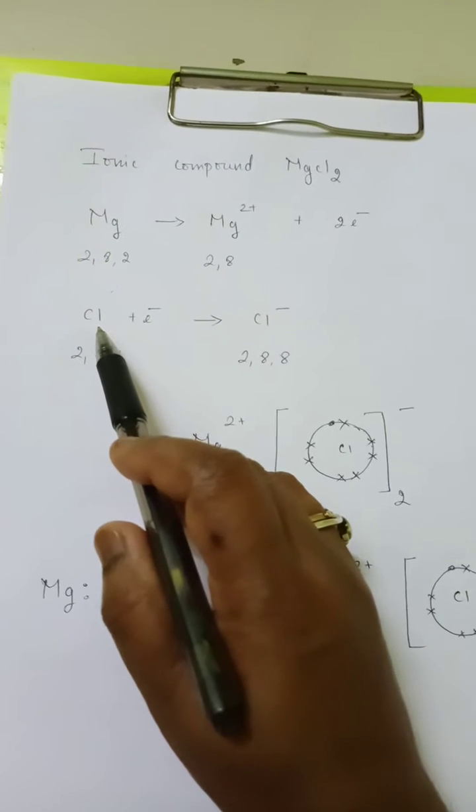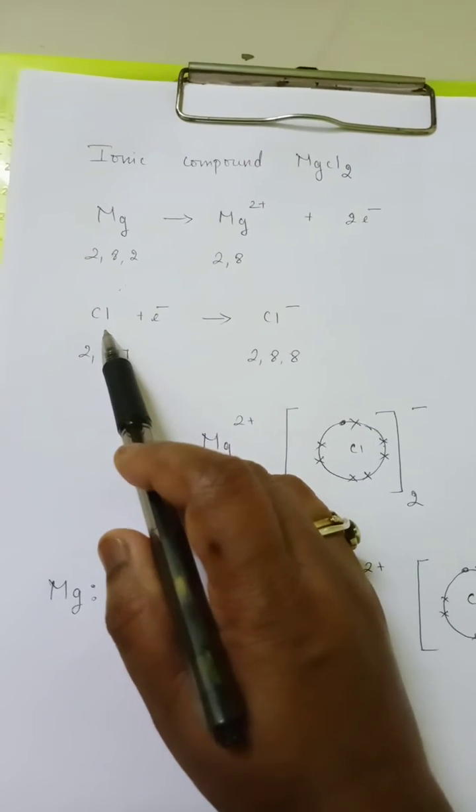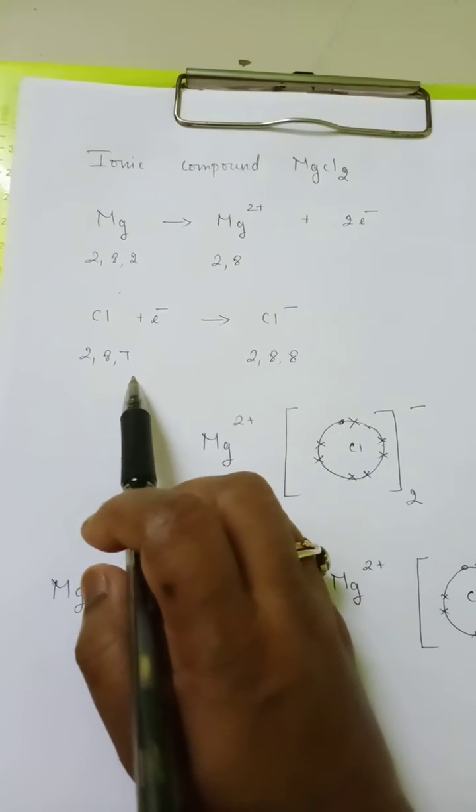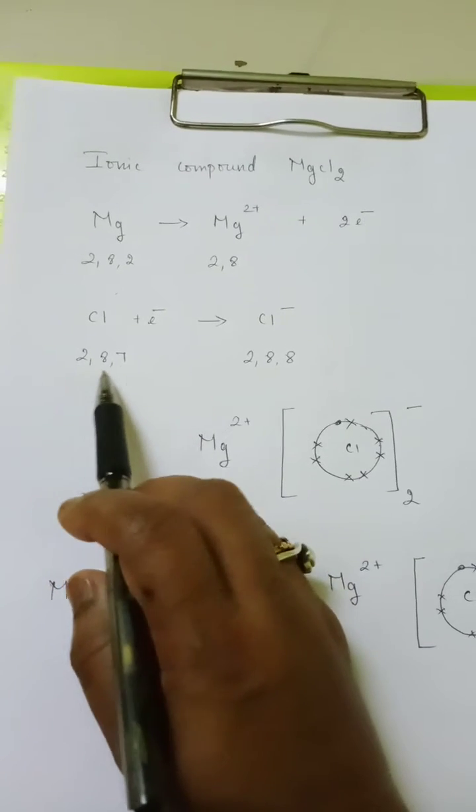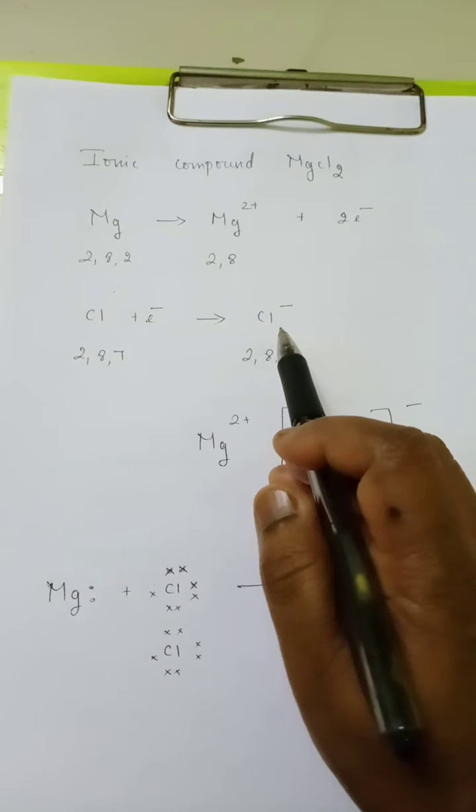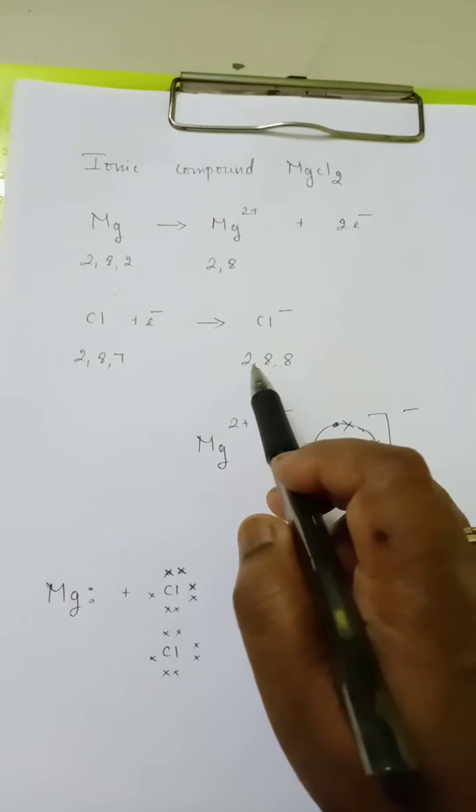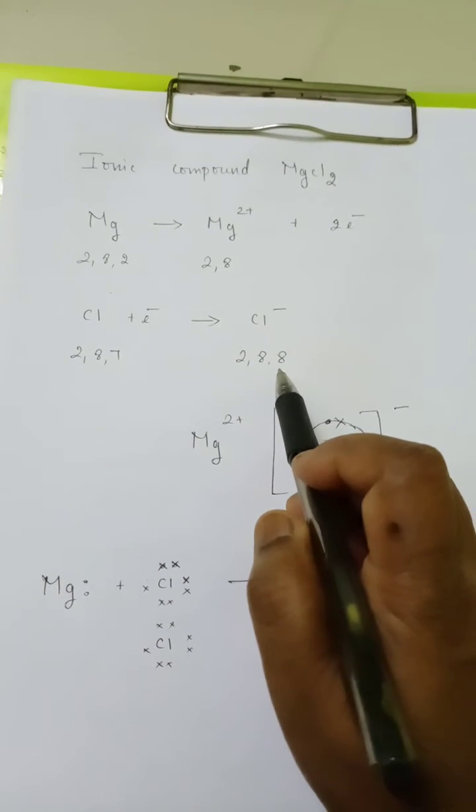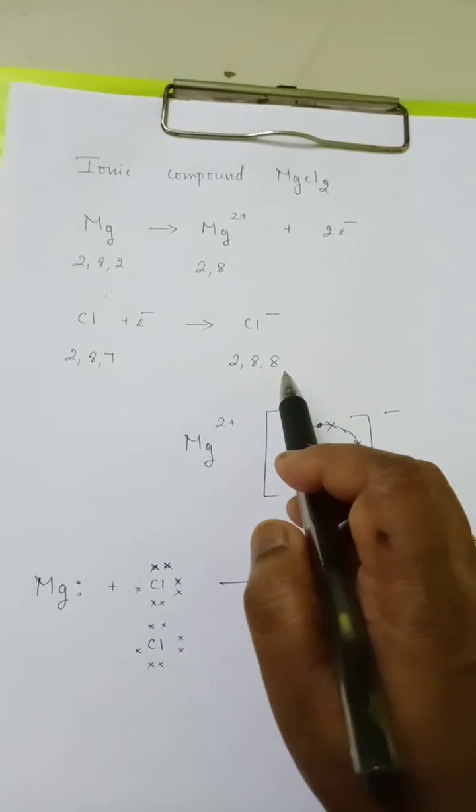If you take chlorine, chlorine is a seventh group element and its electronic configuration is 2,8,7. By gaining an electron, it becomes chloride ion. The electronic configuration for chloride ion is 2,8,8.